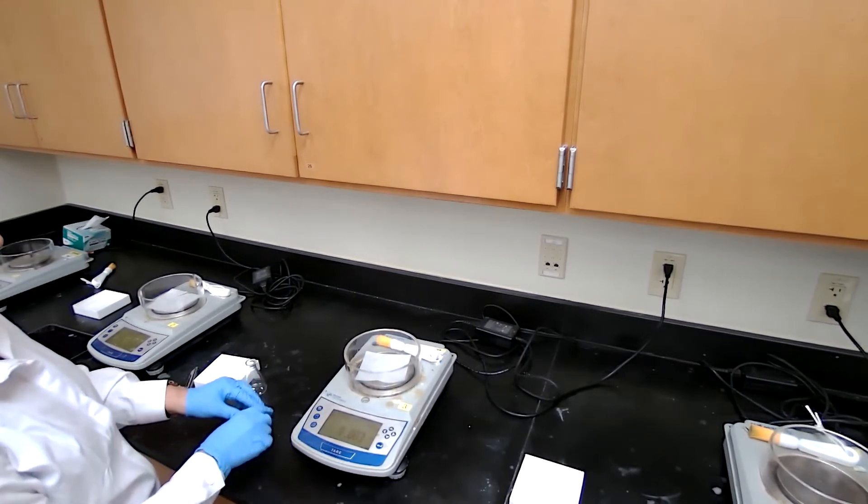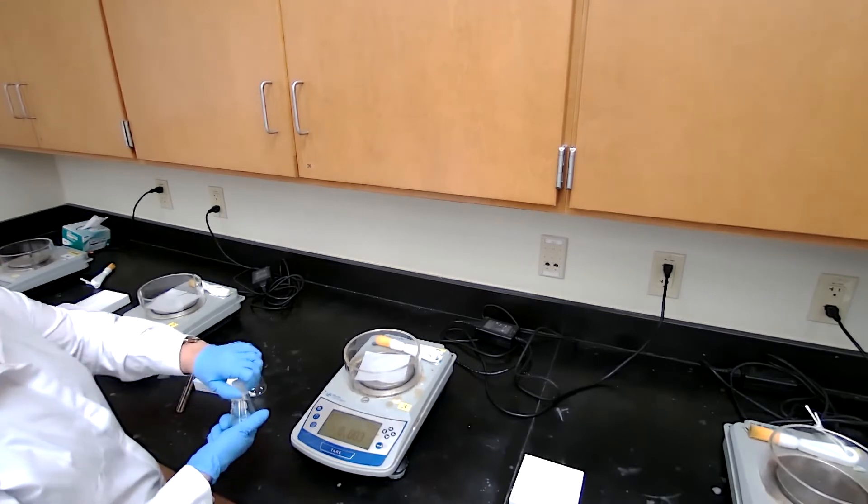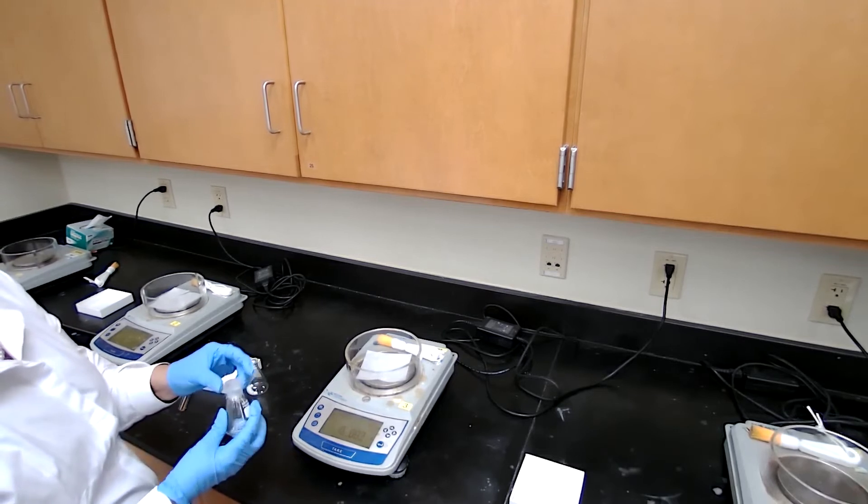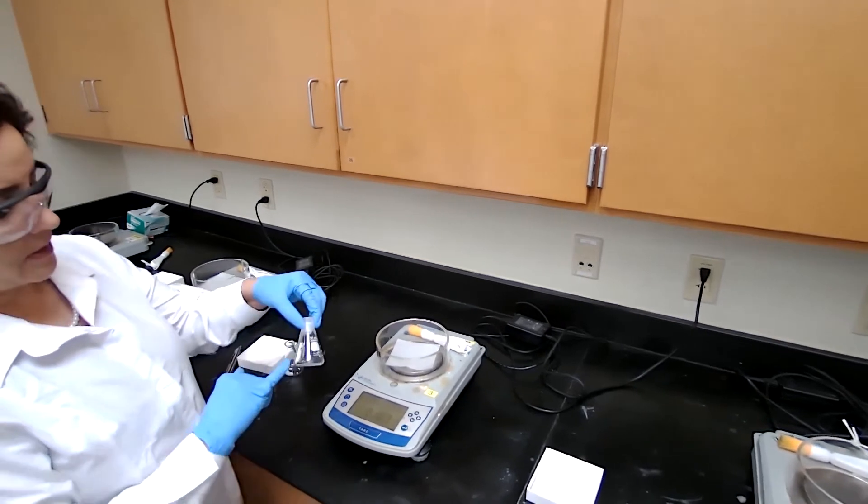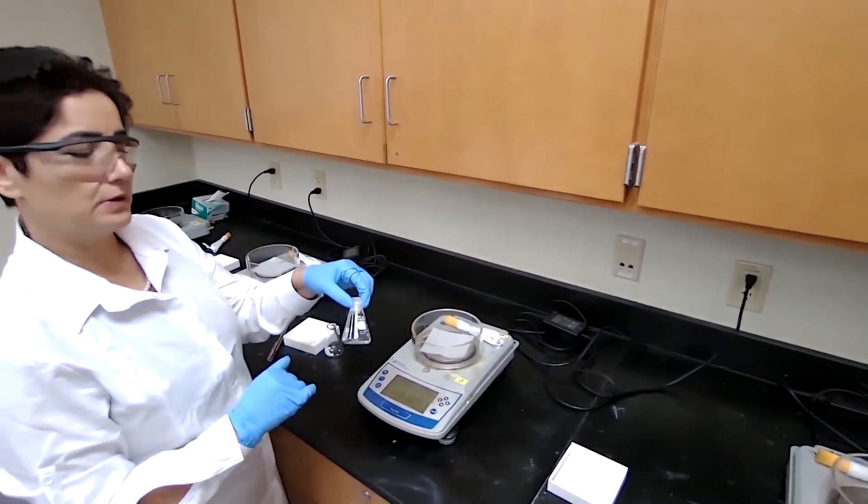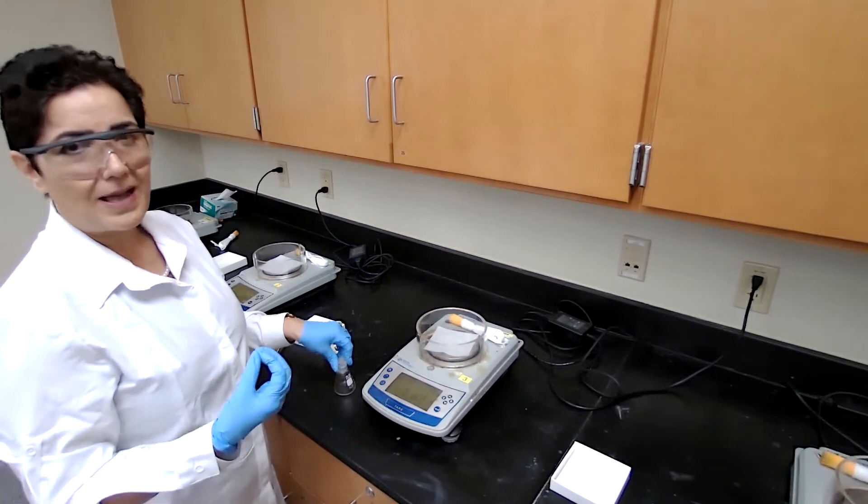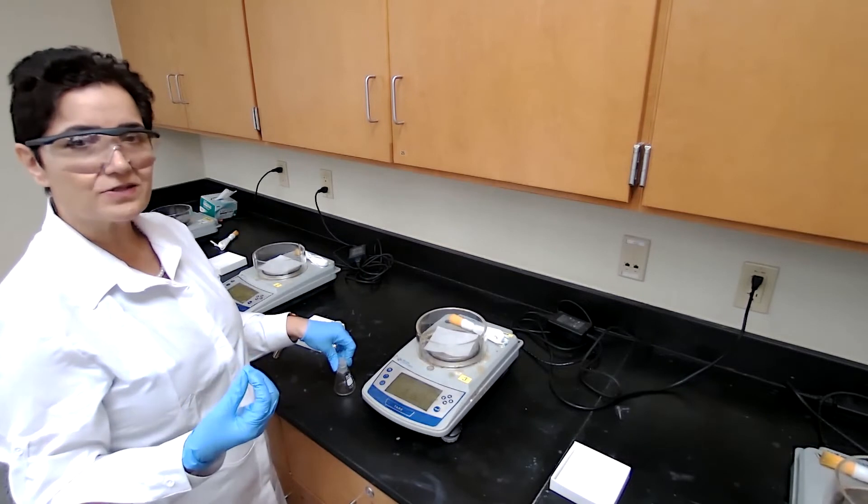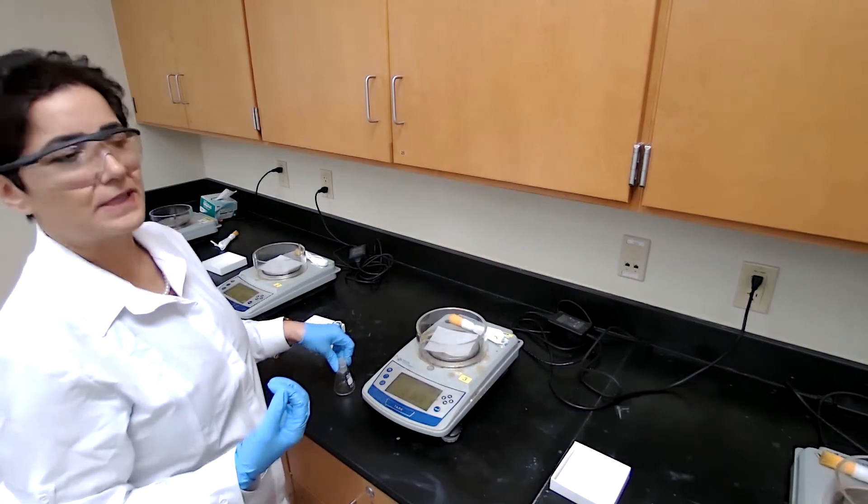We have to prove that this product is t-butyl chloride. So we will test it with silver nitrate. If a white precipitate forms, then we know that this compound is t-butyl chloride. Because it's a tertiary alkyl halide, it's going to form very fast. So as soon as you add the silver nitrate, you should see the white precipitate.